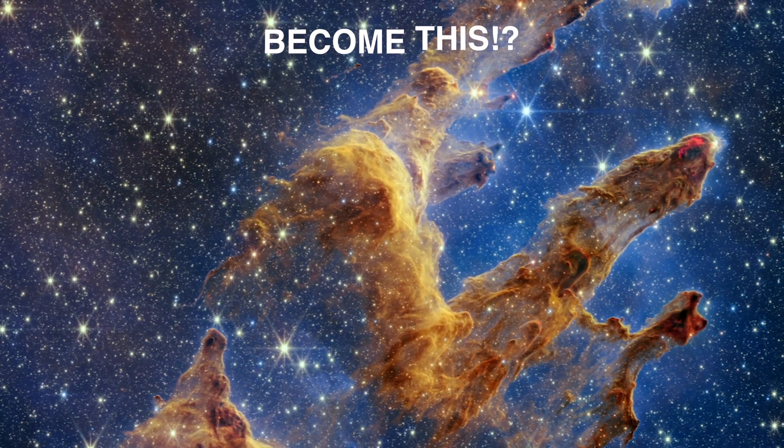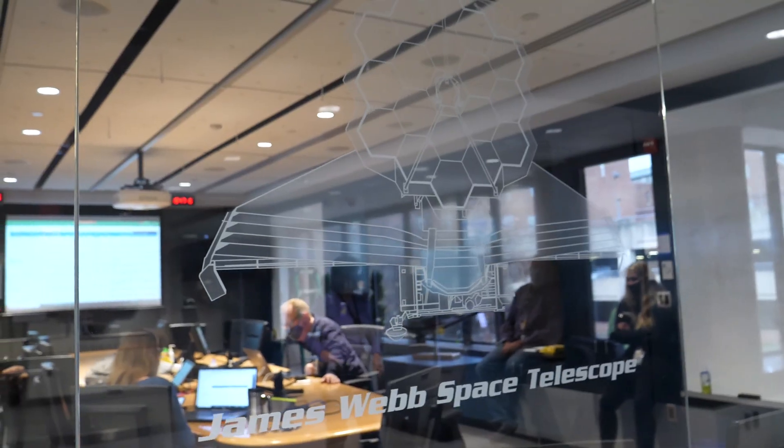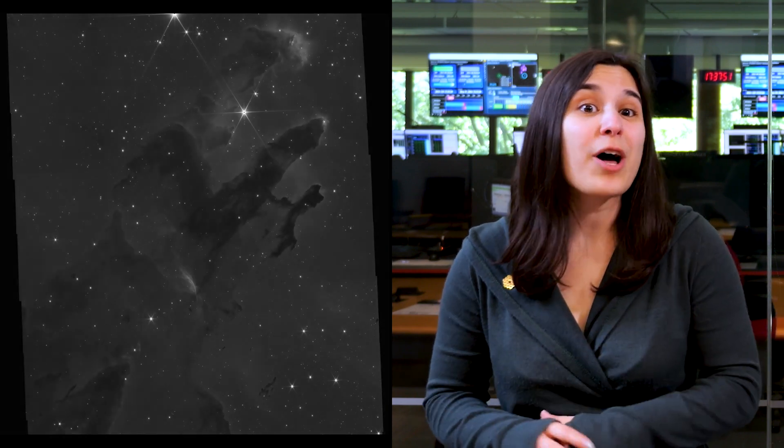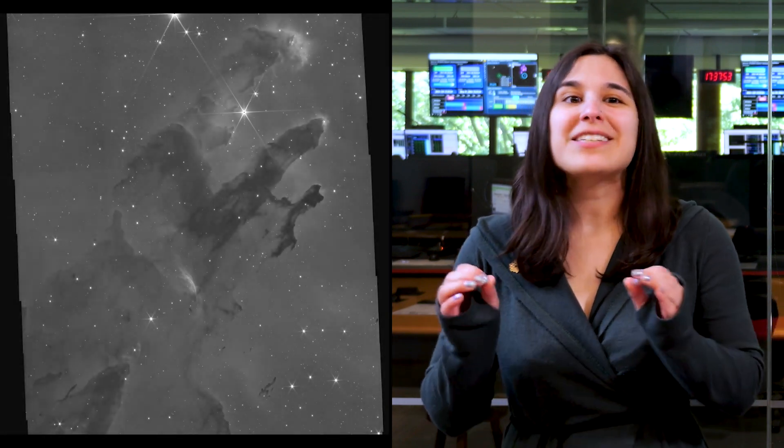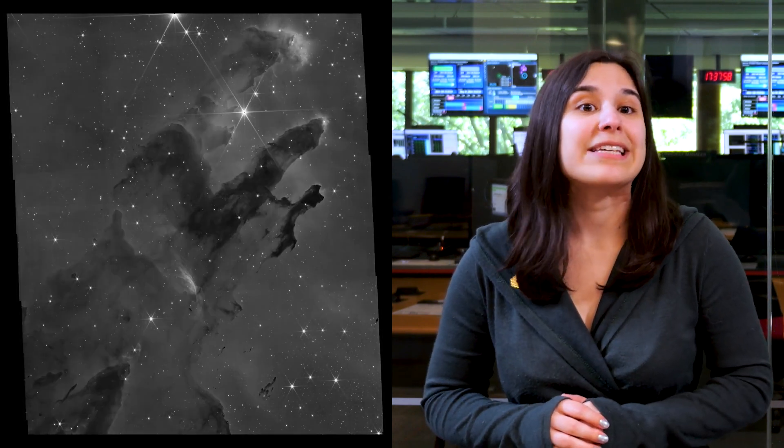How does this become this? Hi, I'm Joseph de Pascual, and I'm Elisa Pagan. We're science visuals developers at the Space Telescope Science Institute, the mission and science operations center for NASA's James Webb Space Telescope. Our job is essentially to take the raw images from Webb and extract and highlight the meaningful information by producing color images from the black and white data we receive.